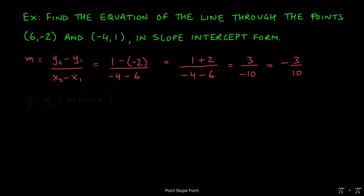Now that we have the slope, we can start using the point-slope form to make our life a little bit easier. We can use the point (-4, 1) here, and when we do, we're going to get y minus y1, which is 1, equals m, which turned out to be -3/10, times x minus x1, which is -4.